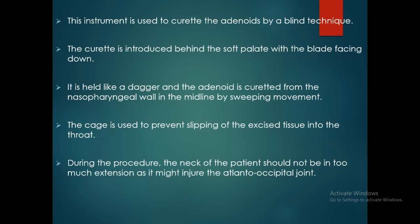The cage is used to prevent the slipping of the excised tissue into the throat during the procedure. The neck of the patient should not be in too much extension, as it might injure the atlanto-occipital joint.